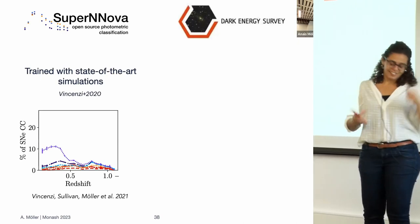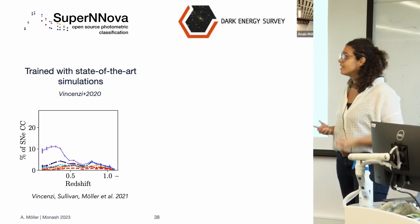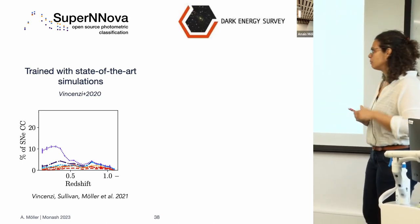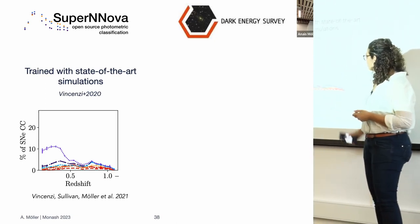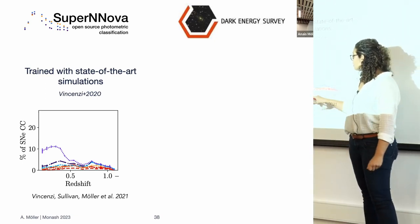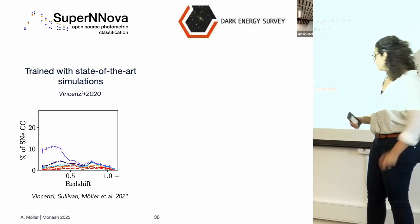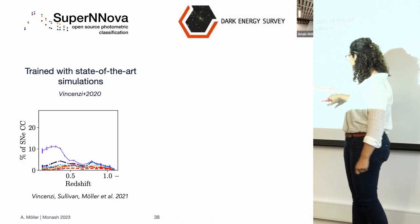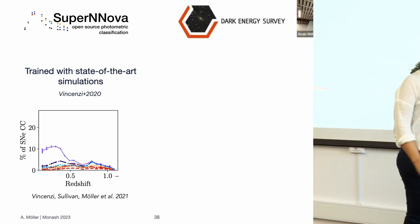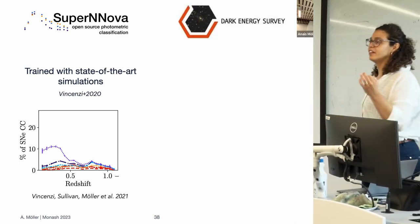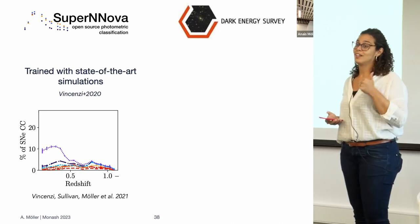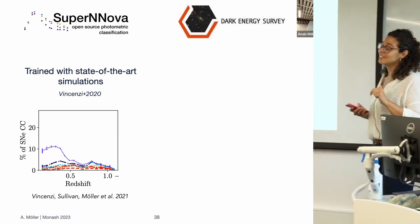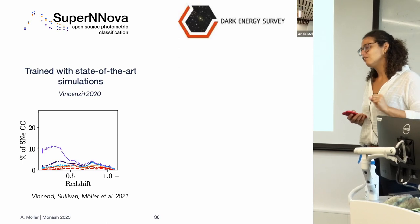For cosmology precision, we first trained with state-of-the-art simulations. Work led by Maria Vincenzi studied the percentage of contamination from core collapse supernovae. Over a large redshift range we can get a very pure sample — less than 4% contamination, which is very good, and can even be less than 2%, which is actually the contamination level of a spectroscopically classified sample. Because sometimes even spectroscopic classification isn't certain.